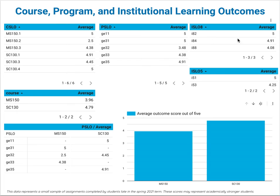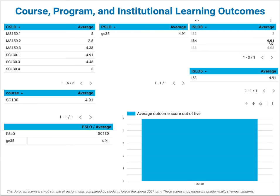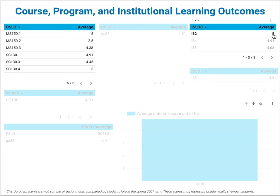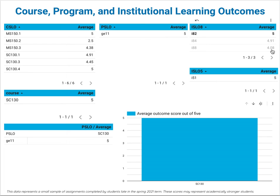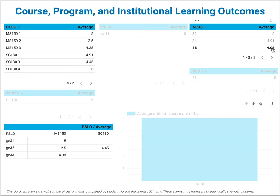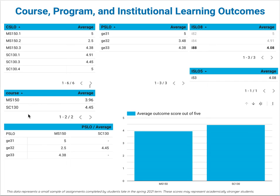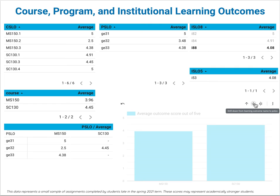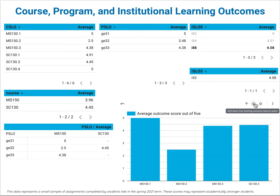I can say, okay, I want to know about 8.4 — well, that's coming from SC 130 only. Institutional learning outcome 4 and institutional learning outcome 2 are also from SC 130. So institutional learning outcome 8 is the only one being fed by both of these courses. Below you can see a chart which you can drill down into to look at some of the underlying metrics and numbers.